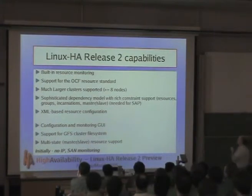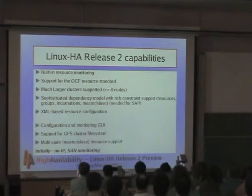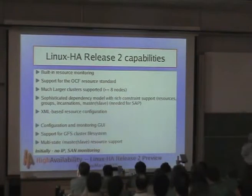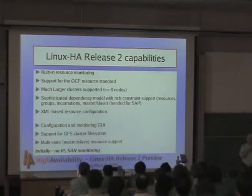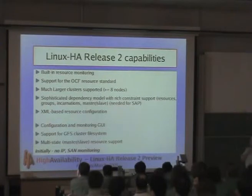Release two does that and a lot more. It has built-in resource monitoring, which I put first because that is the most commonly requested feature — so you don't have to write another tool and configure two tools. The average person gets release one up in about a half day. We've seen people who don't know anything about HA pick it up in a half day: download the software, install it on the machine, and get it working — even if they don't read the manuals, which appears to be the paradigm most people use.